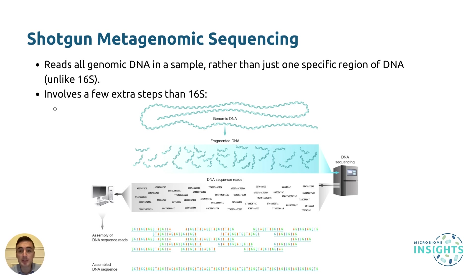As genomes are sequenced, it is also possible to identify and profile microbial genes that are present in the sample, known as the metagenome, which provide additional information about microbiome functional potential. The process for metagenomic sequencing involves a few extra steps compared to 16S sequencing, but these steps can vary slightly depending on the methods used.